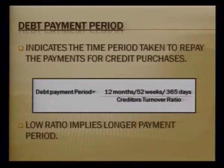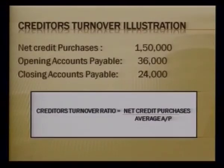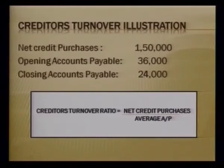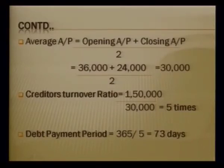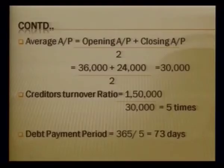For the illustration: net credit purchases are one lakh fifty thousand. Opening accounts payable are thirty-six thousand, closing accounts payable are twenty-four thousand. Average accounts payable equals thirty-six thousand plus twenty-four thousand divided by two, which is thirty thousand. Creditors turnover ratio equals one lakh fifty thousand divided by thirty thousand, giving five times. Debt payment period equals 365 divided by 5, giving 73 days.